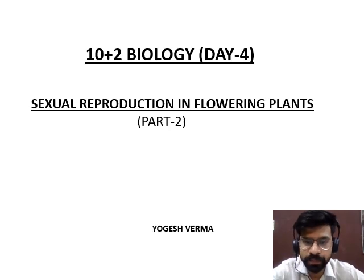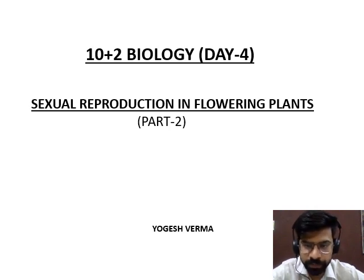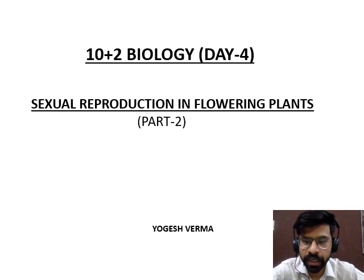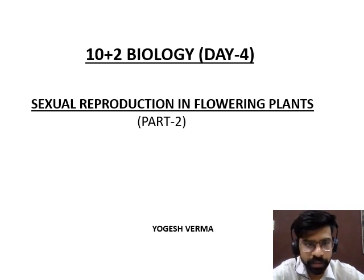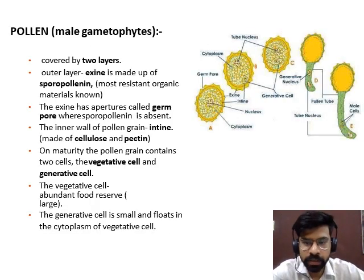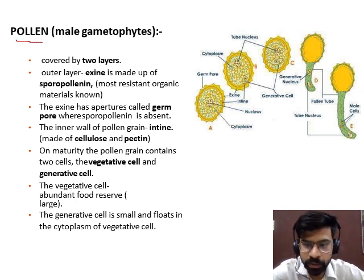Good morning students. In the previous lecture, we have already studied about what is a flower, parts of flower — sepal, petal, androecium and gynoecium — regarding anther and filament, and regarding the formation of pollen grain, i.e., microsporogenesis. In today's lecture, we start with pollen.